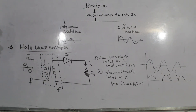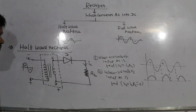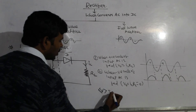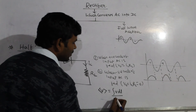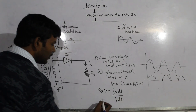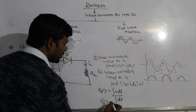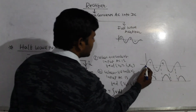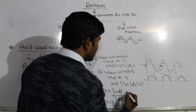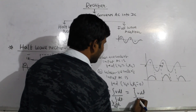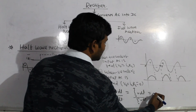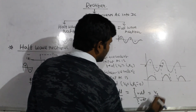Now we can calculate the average output voltage and output current. The average value of output voltage is V = integration of V·dt divided by integration of dt. For the full cycle with time period T, integrating from 0 to T, the output voltage comes out to be V₀/π, where V₀ is the peak input voltage.